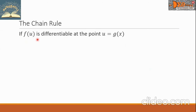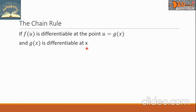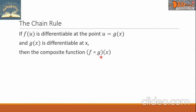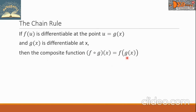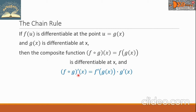If f of u is differentiable at the point u equals g of x, and g of x is differentiable at x, then the composite function f composite g of x equals f of g of x, is differentiable at x, and f composite g prime of x equals f prime of g of x times g prime of x.